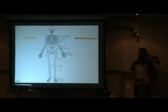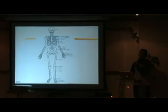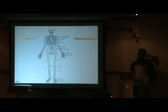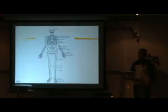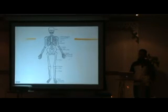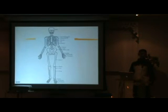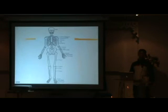So, the scapula is here, then the clavicle — famous as a commonly broken bone — and here the humerus. Then the radius and ulnar: ulnar on the inside, radius on the outside. Then carpals and metacarpals, and then the phalanges. The large bone of our thigh is the femur, then the kneecap — the patella — and then the tibia and fibula, and all the tarsals and phalanges.